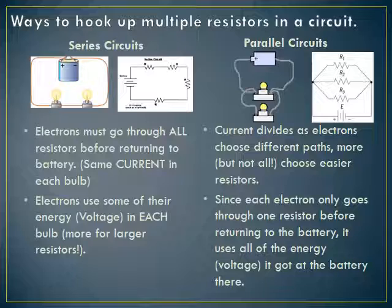As far as the voltage goes, since each electron is only going through one resistor, they get all their energy, use it in that one resistor, and then go straight back to the battery. That electron is going to use up all of its energy in that one resistor — it doesn't have to share it because it's only going through one resistor.